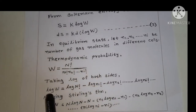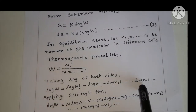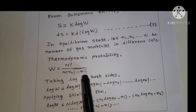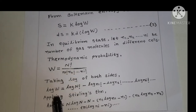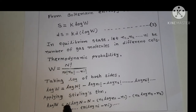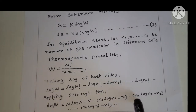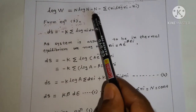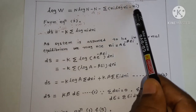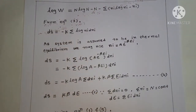Applying Stirling's theorem — log n! = n·log n minus n — we get: log W equals N·log N minus N, minus summation of (ni·log ni minus ni). Simplifying: log W equals N·log N minus N minus summation of (ni·log ni minus ni).